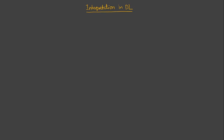Hello and welcome. We are discussing the interpretation of class expressions in description logic. In the last lecture we defined our interpretation function. When we talk about the interpretation of a class expression, it consists of two things: the domain of individuals and the interpretation function. Both of these were discussed in the last lecture.